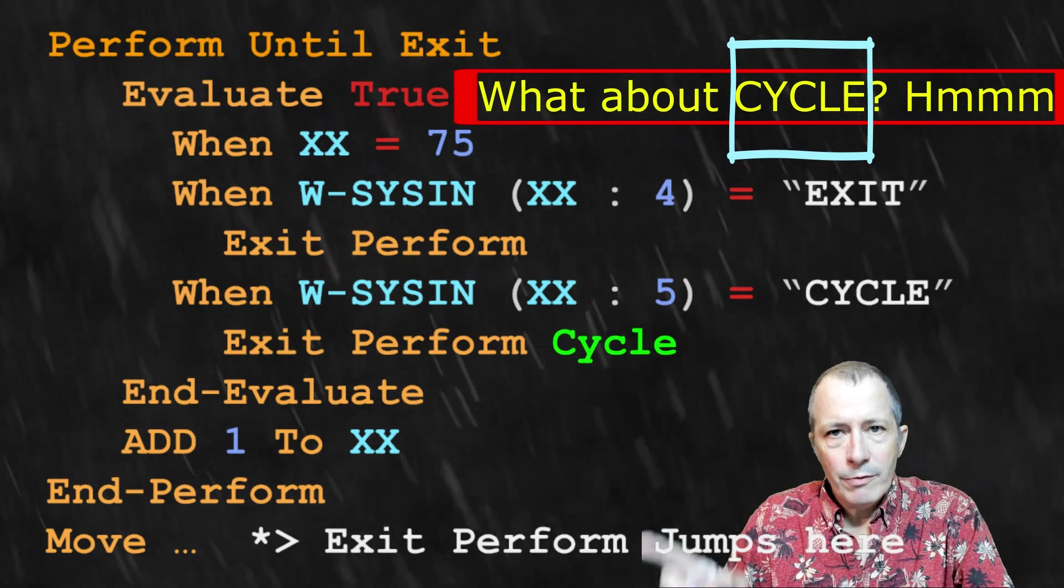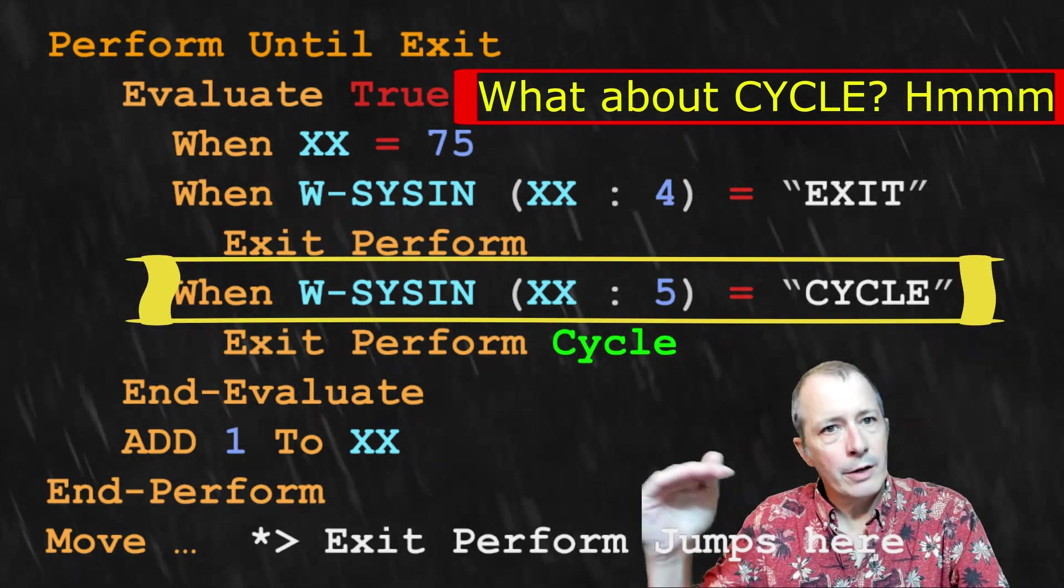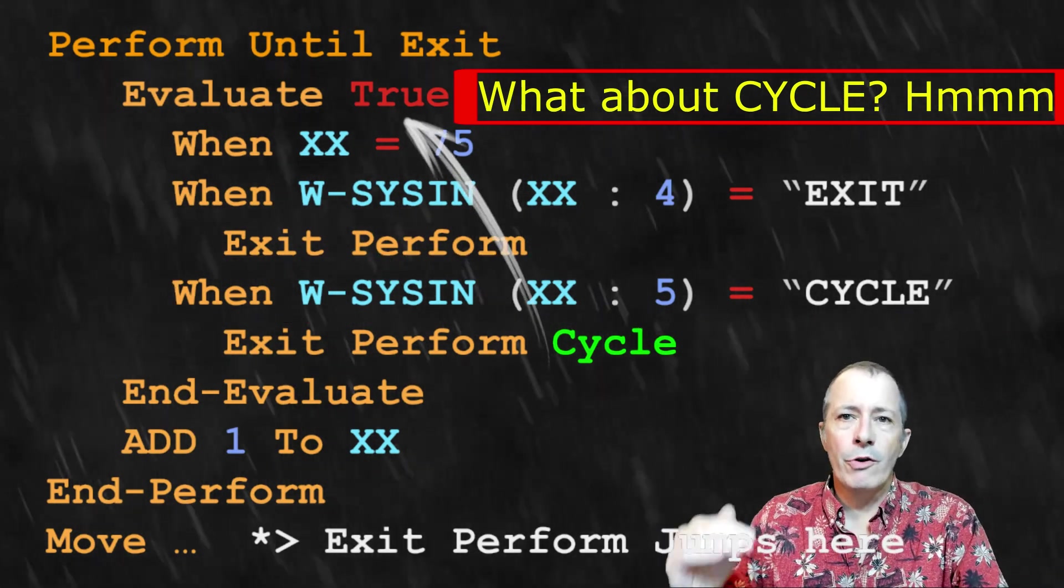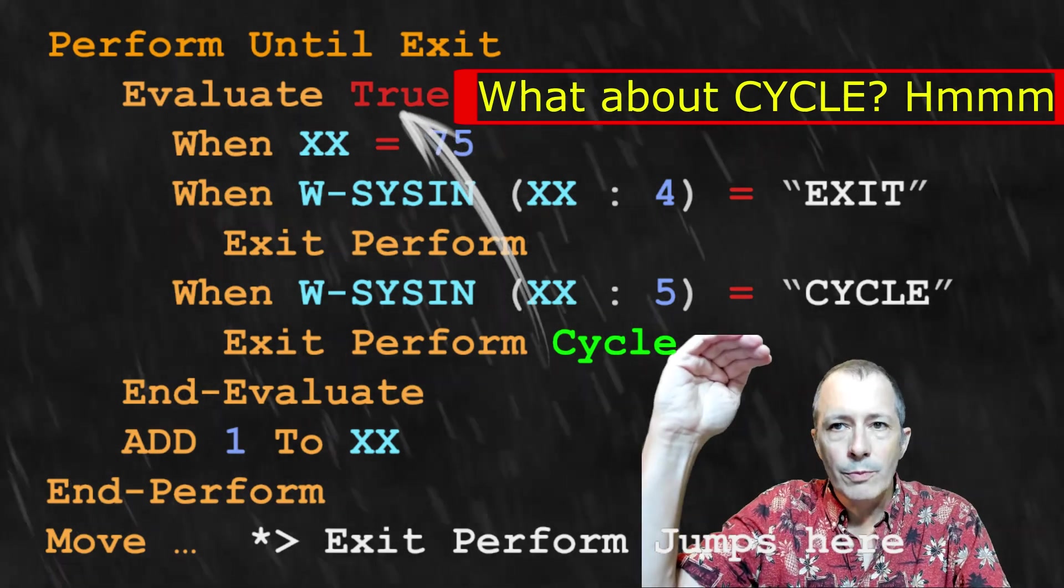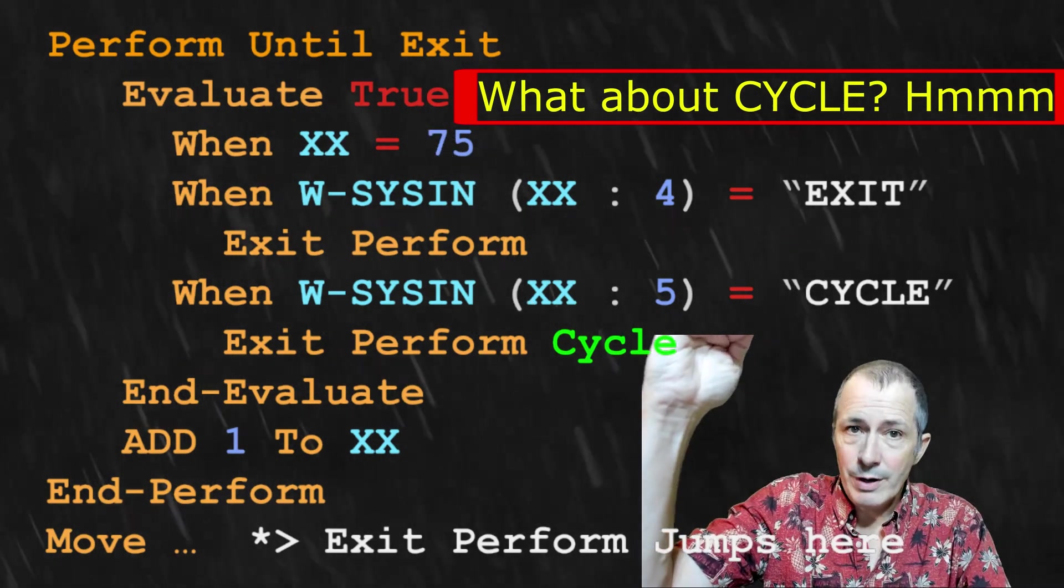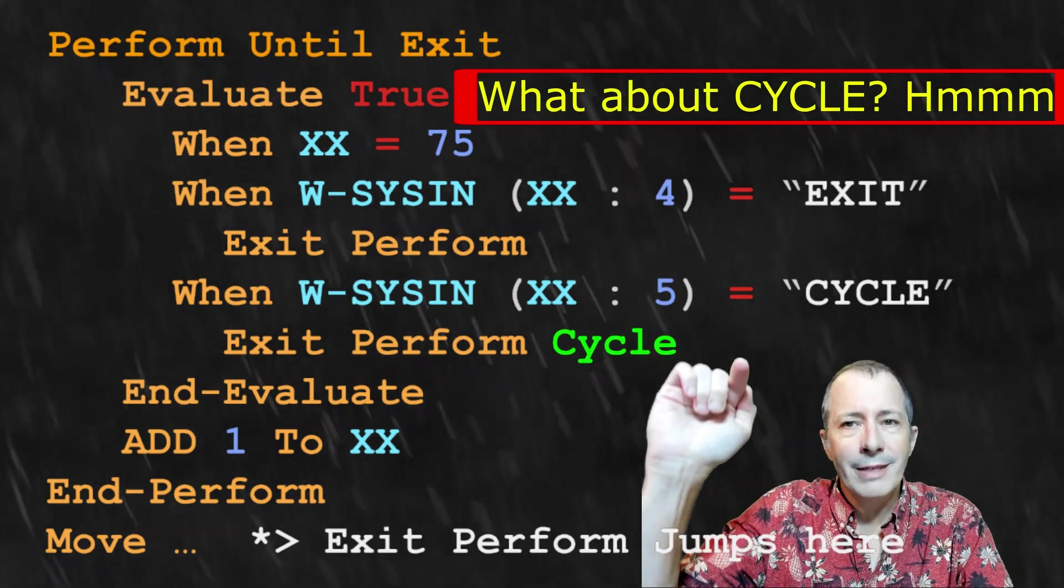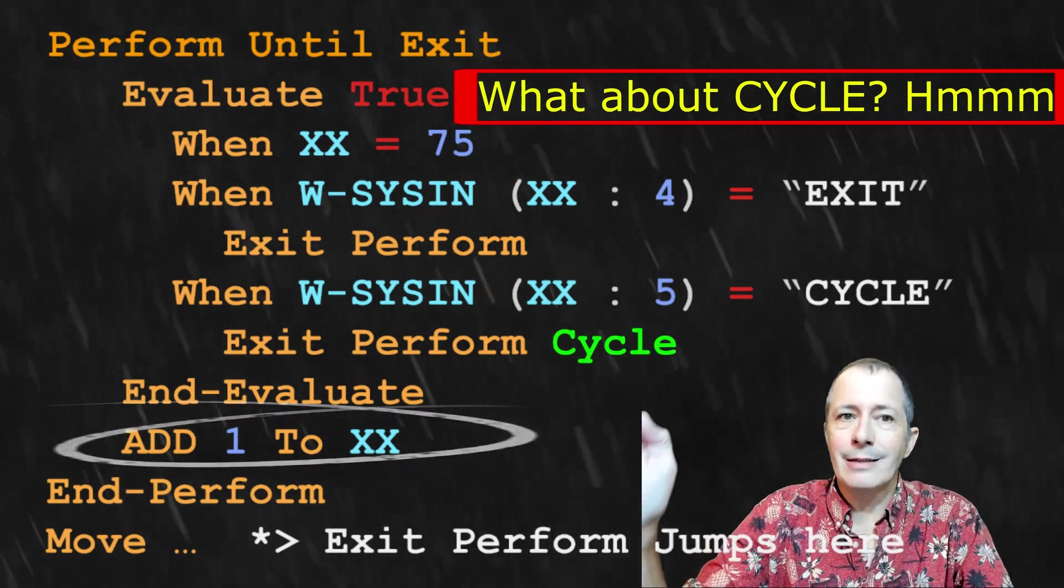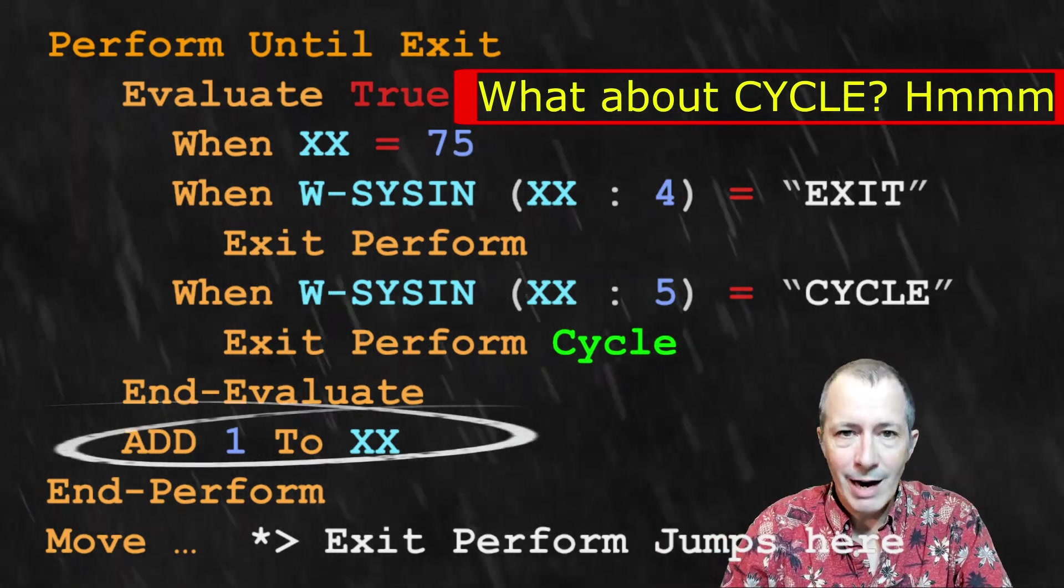When xx becomes 12, the third when is true, and control is transferred to the first statement in this loop. That is the evaluate. And xx is still 12 because the add 1 to xx is after the evaluate.